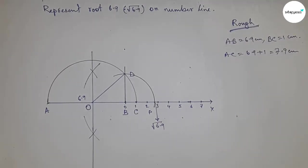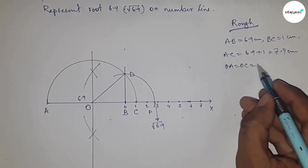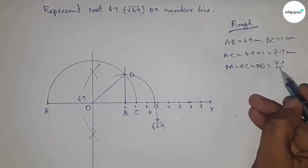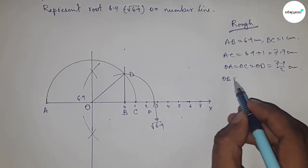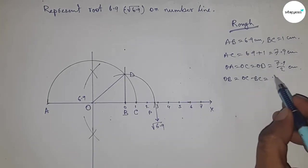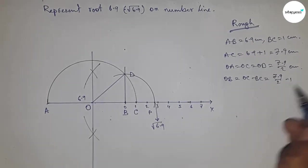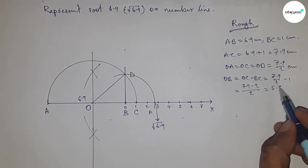Now radius OB equals 7.9 by 2 centimeters. Distance OB can be written as OC minus BC. Putting the values of OC and BC and calculating, this is 5.9 by 2 centimeters.